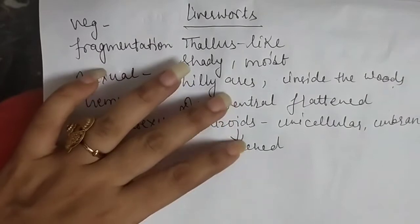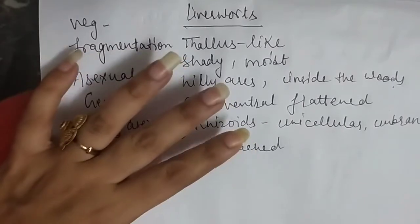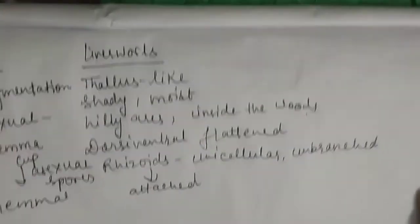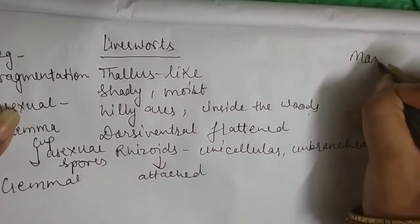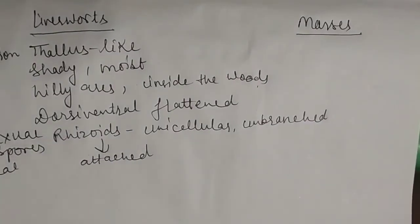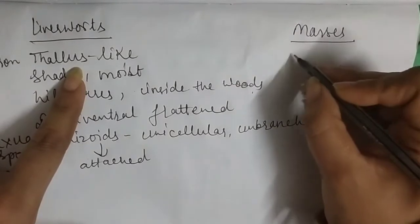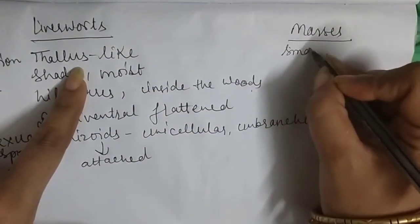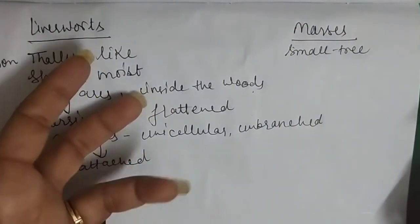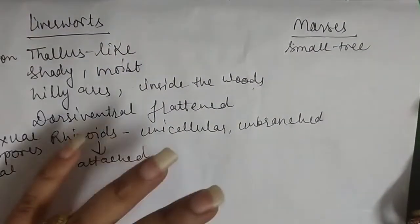The sporophyte in liverworts is less elaborate and simple, not as complex as in mosses. Now we are going to discuss mosses. Some things are the same, but there are key differences. The first difference is that mosses do not have a thallus-like body — instead, they have a small tree-like body. It is more elaborate, with a root structure in the form of rhizoids, a stem, and leaves. It is not a thallus body; it shows all the organs.